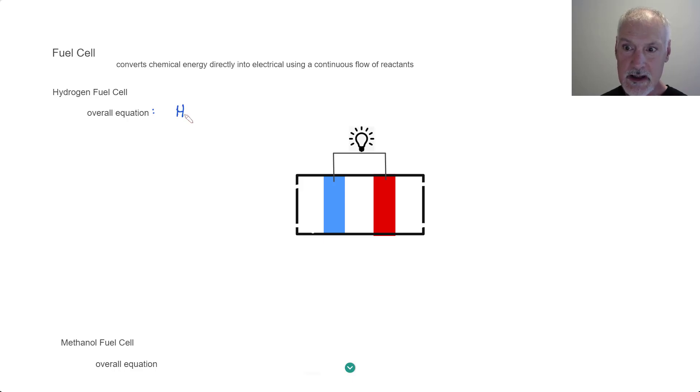We have hydrogen gas and oxygen gas combining to create water. Now let's balance this with a two here and a two here. Now let's turn to my simplified cell shown here. I'm going to give it a direction of electron flow. I'm going to say that the electrons in my particular fuel cell are flowing in this direction.